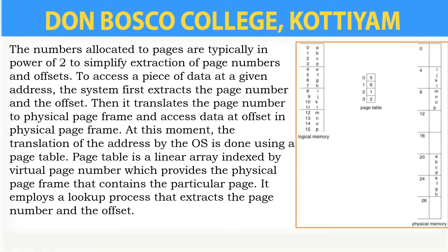Let us now calculate a physical address. For logical address 0, the page number is 0 and the offset is also 0. The formula for physical address is: frame number × page size + offset. The corresponding frame number for page 0 is 5. So physical address = 5 × 4 + 0 = 20 + 0 = 20. Therefore, the physical address for the value A is 20.